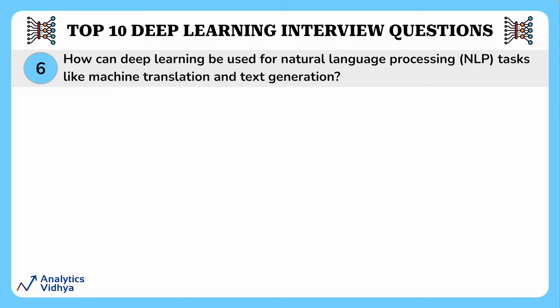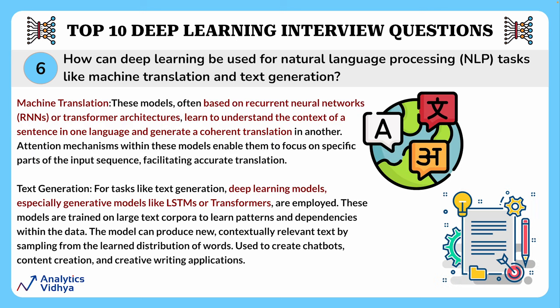This question asks how deep learning can be used in NLP tasks like machine translation and text generation. Deep learning is pivotal in advancing natural language processing tasks. For machine translation, deep learning models — particularly sequence-to-sequence architectures based on RNNs or transformer architectures — learn to understand the context of a sentence in one language and generate a coherent translation in another. The attention mechanism within these models enables them to focus on specific parts of the input sequence, resulting in accurate translations.